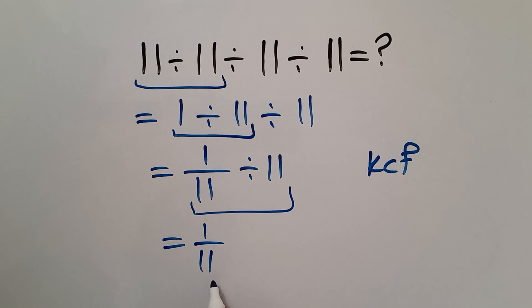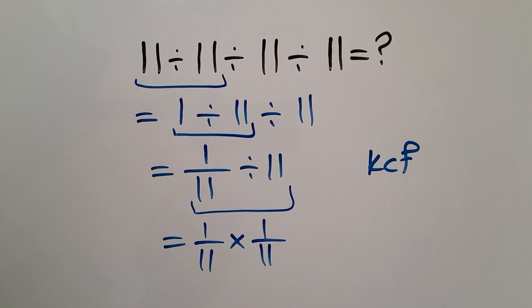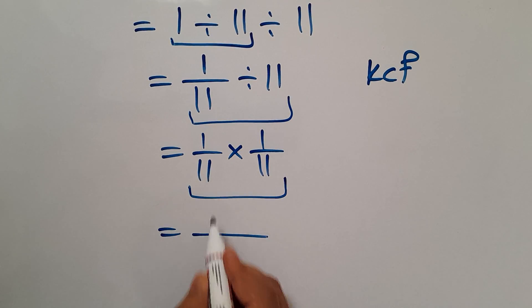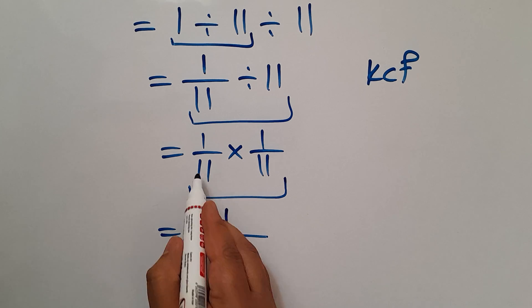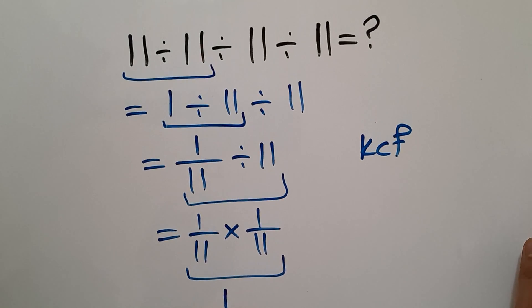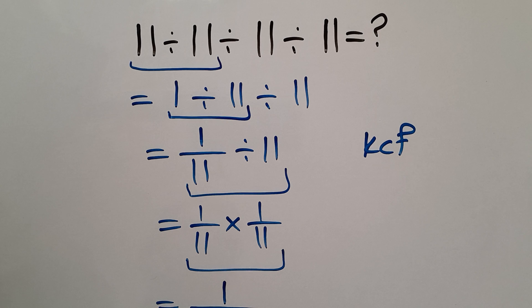And this is equal to 1 times 1 gives us 1, and 11 times 11 equals 121. So our final answer to this problem is 1 over 121.